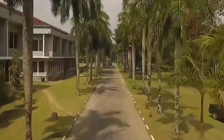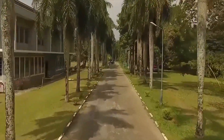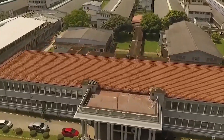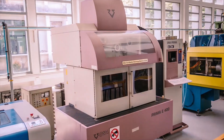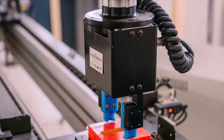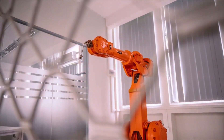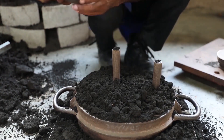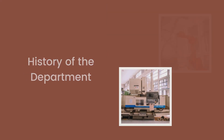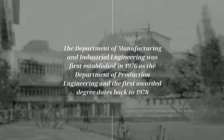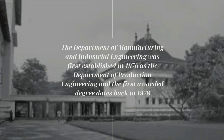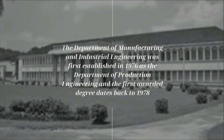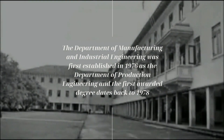The Department of Manufacturing and Industrial Engineering directly promotes the Faculty of Engineering and the University of Paradinia by providing distinctive and innovative learning experiences. The Department has played a leadership role in providing the best education in manufacturing and industrial engineering through its efforts in hands-on, real-world engineering education. The Department was first established in 1976 as the Department of Production Engineering, and the first awarded degree dates back to 1978.